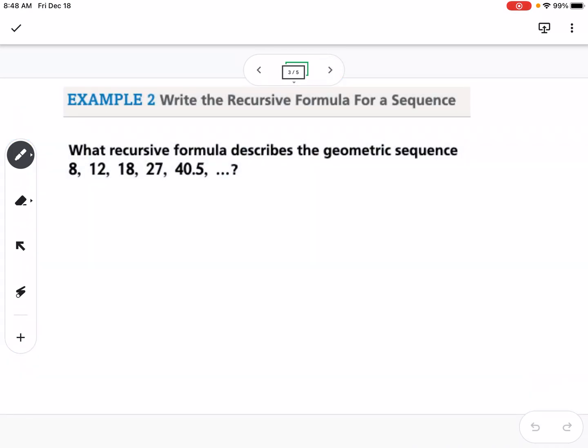We're going to look at how to write recursive formulas. Remember, we're back to arithmetic sequences when we did recursive and explicit. These formulas are going to be very similar. A recursive formula looks like this: we have a1, which is your first term, then an equals an minus 1 times r, which is our common ratio.